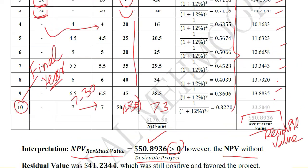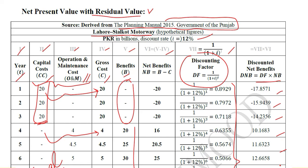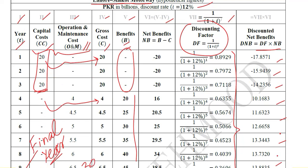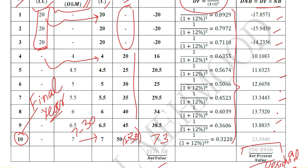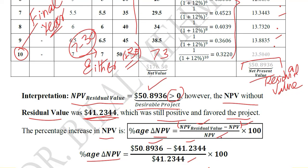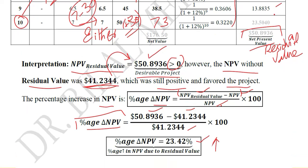In this way we can observe that the residual value can be appropriately included in our stream of benefits or stream of costs — either of these options can be used. We used the benefit side, and came up with a new value of NPV that was even better than the previous value. Finally, we calculated the percentage change in NPV, which is substantial — a significant effect of including residual value via addition in the benefits column in the final year.